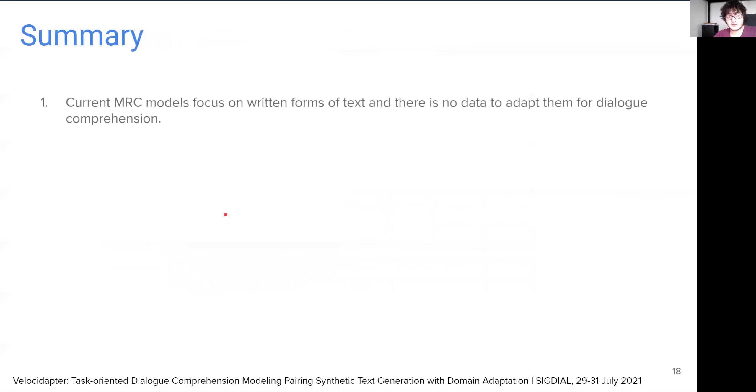To summarize this presentation, the first takeaway message is that current machine reading comprehension models focus on written forms of text. Thus, they do not generalize well on conversational data and there is not enough data to adapt current models to this task. To address this, we propose to capture dialogue state tracking tasks as dialogue comprehension by annotating a few questions for each slot and we create a new dataset with this strategy, which we call MRC-WOZ.